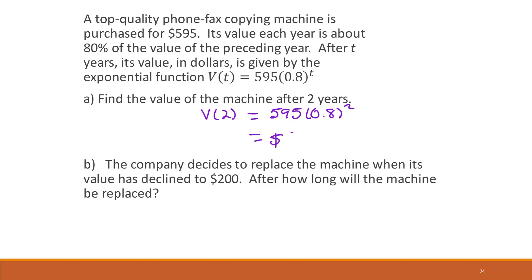Part b says the company decides to replace the machine when its value has declined to $200. After how long will the machine be replaced? So this time the value is $200. And we're solving for the time.